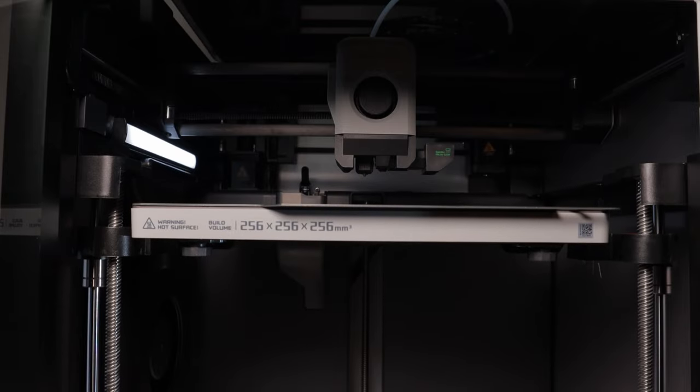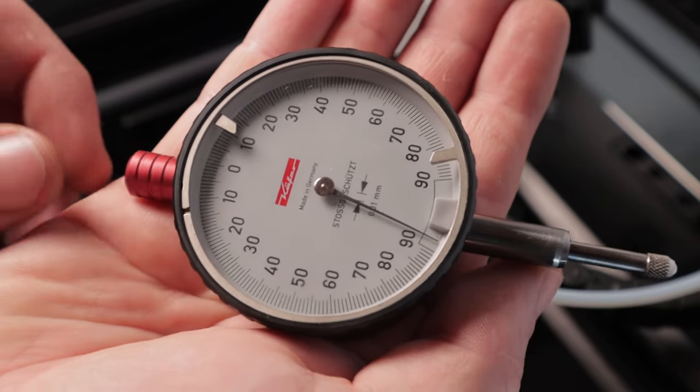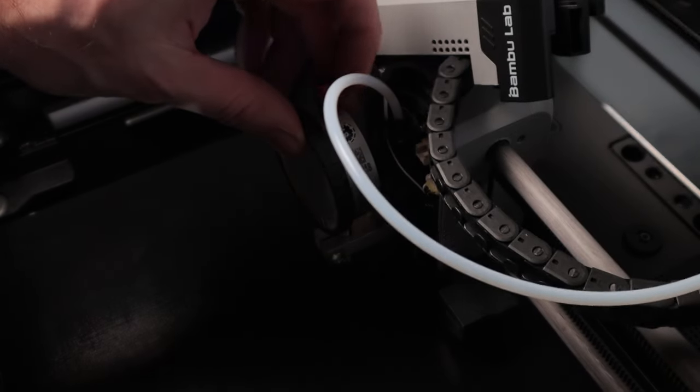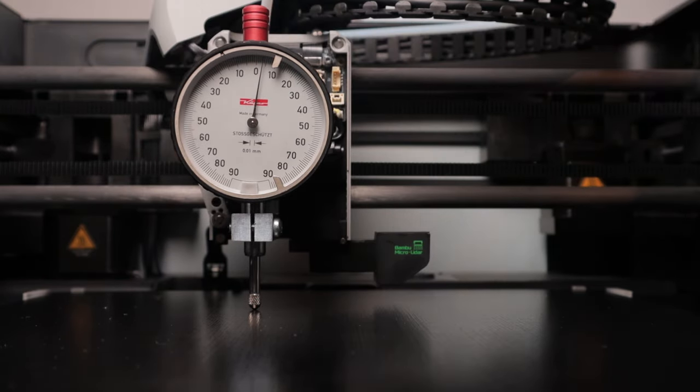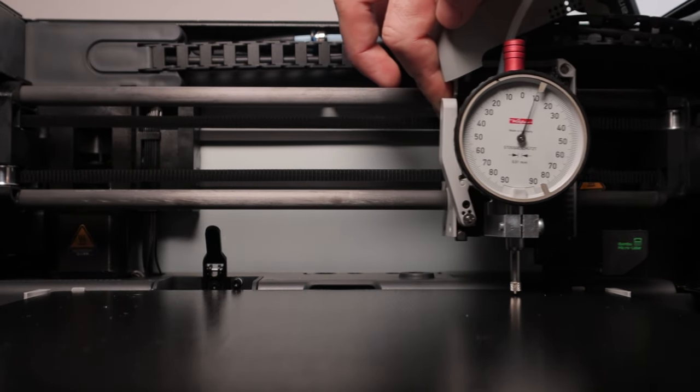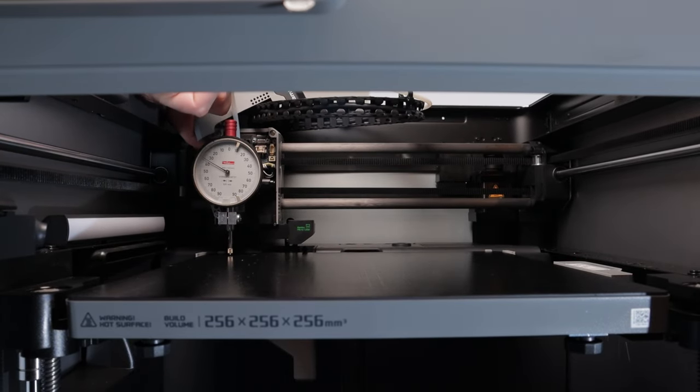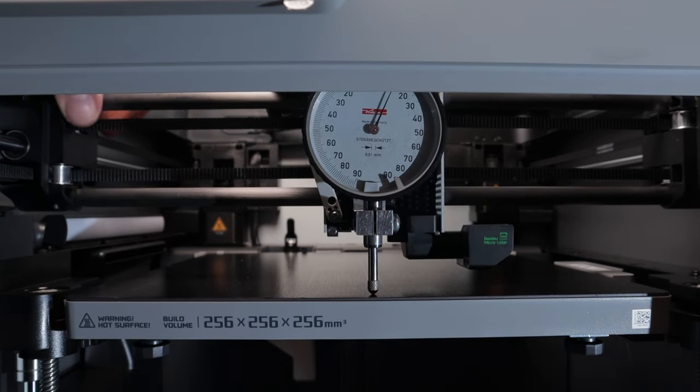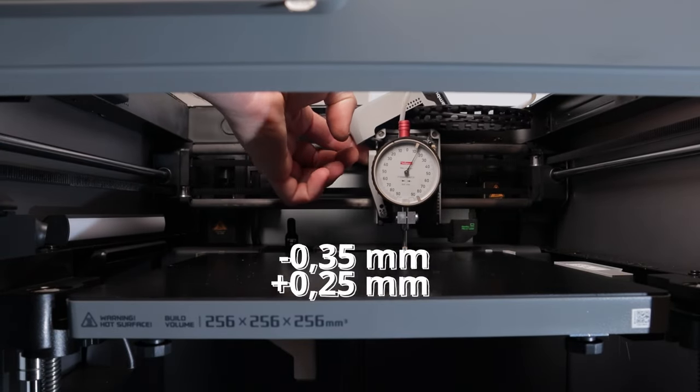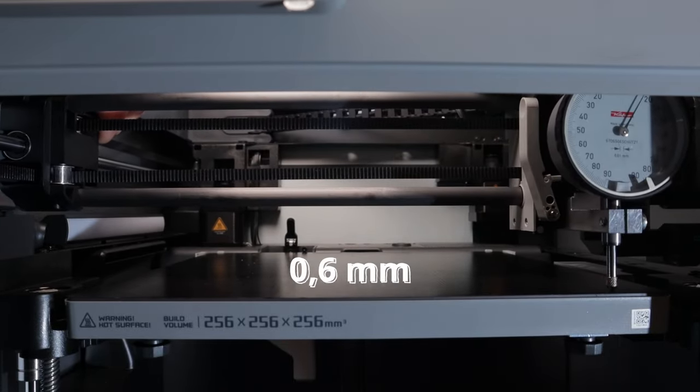I would like to test how flat and tramped the bed is right from the factory. So I made this tiny aluminum bracket for a dial indicator that goes instead of the hotend. I swiped the whole surface in a regular grid and the difference between the lowest and the highest point is 0.6 mm which is quite a lot.